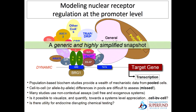But how do you take the population-based studies and apply them at a single cell level? All this information has been collected on large numbers of cells and tissue. Cell-to-cell or even allele-by-allele heterogeneity is impossible to detect when you just grab millions of cells.